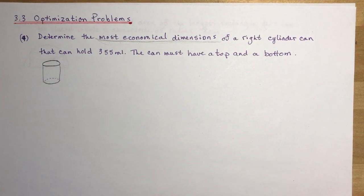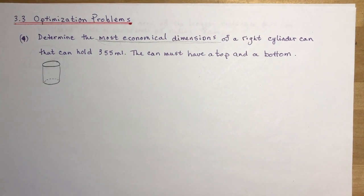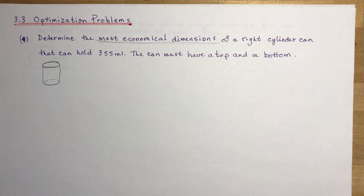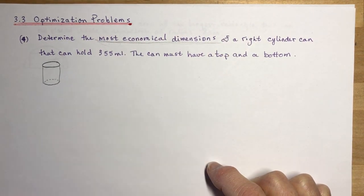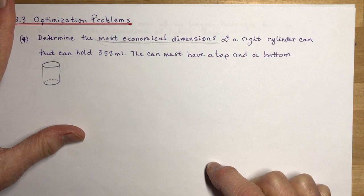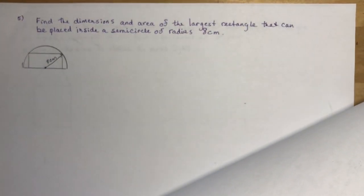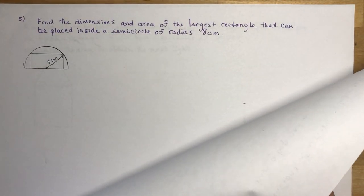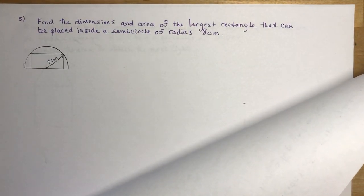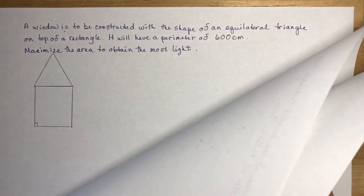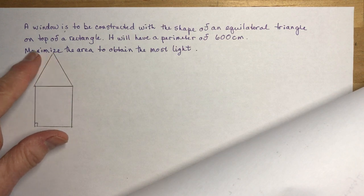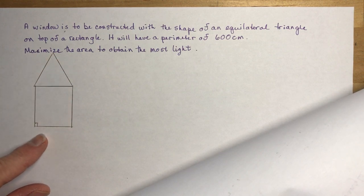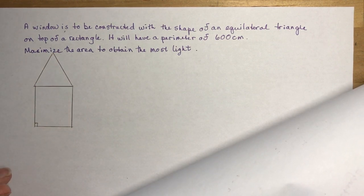3.3 more optimization problems today. The first is determining the most economical dimensions of a right cylinder can. The second is finding the dimensions of the largest rectangle that can be placed inside a semicircle. Finally, we'll figure out the maximum area to obtain the most light when building a window with an equilateral triangle on top and a rectangle on the bottom.